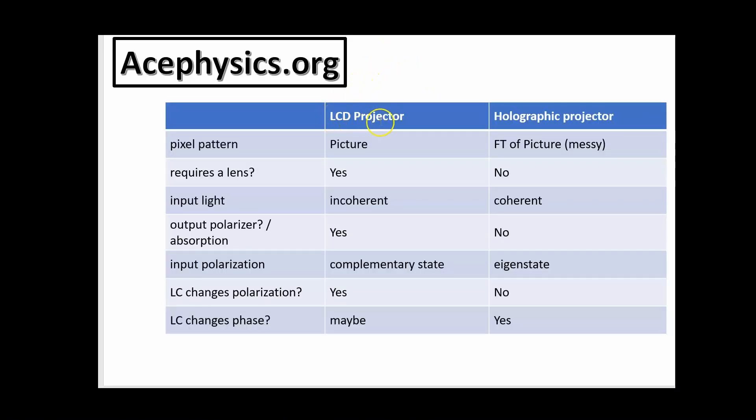So finally, I want to summarize by comparing and contrasting the LCD projector with the holographic projector. If we consider the pixel pattern on the projector screen, the LCD projector has an actual picture of the words ace physics or a circle or anything else, but the holographic projector, what's actually on the screen is a messy-looking Fourier transform of the picture that you're trying to project. The LCD projector requires a lens to image the screen on the wall somewhere, but with a holographic projector, you don't use a lens. You just need to let the light diffract into the pattern that it's diffracting into.